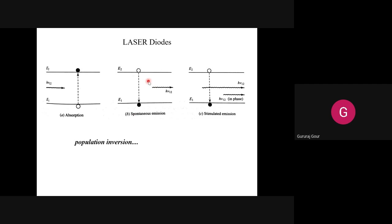In the second picture, you can see spontaneous emission. The electron jumps from energy level E2 to energy level E1, with liberation of energy - emission of radiation. This is spontaneous emission: the concept behind the working of the LED.